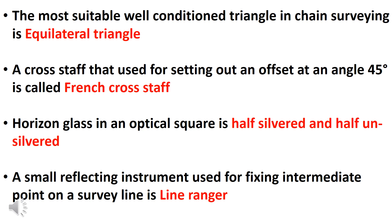The optical square is half silvered and half unsilvered. A small reflecting instrument used for fixing intermediate points on the survey line is a line ranger.